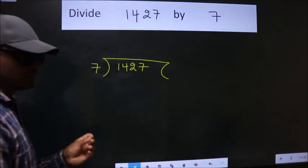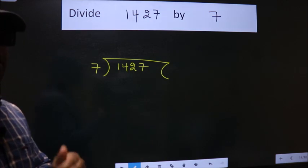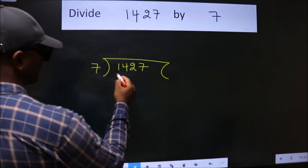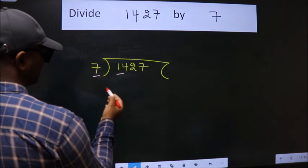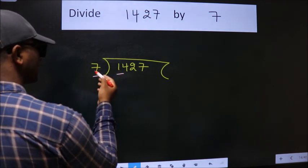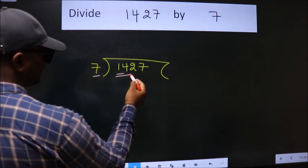This is your step 1. Next, here we have 1. Here 7. 1 is smaller than 7. So, we should take two numbers, 14.